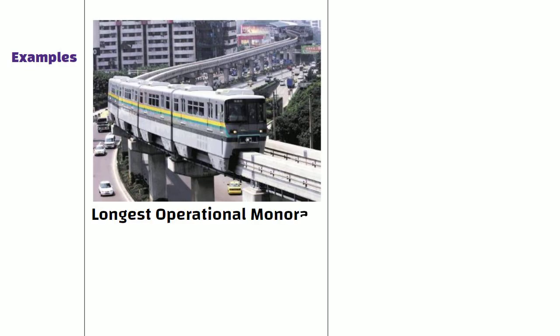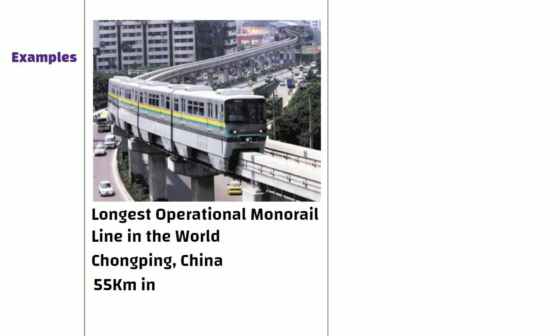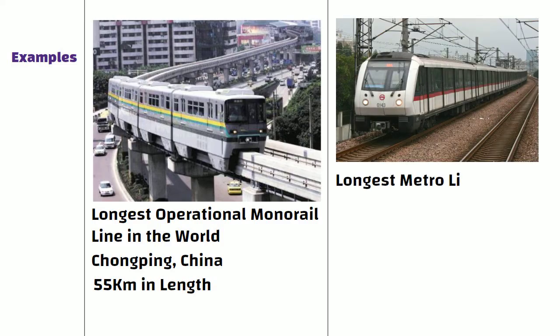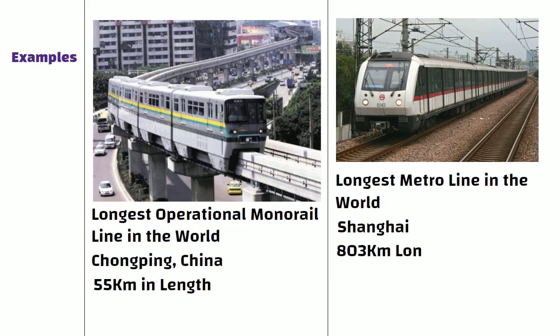Examples. The longest operational monorail line in the world is located in Chongqing, China, which is 55 km in length. On the other hand, the longest metrorail in the world is also located in China, which is 803 km long.